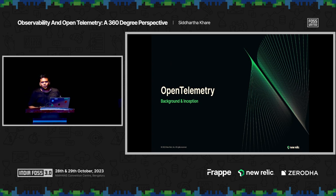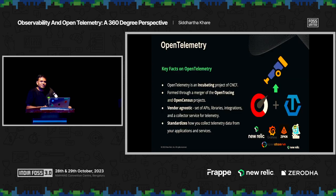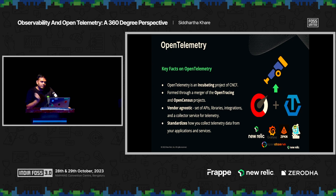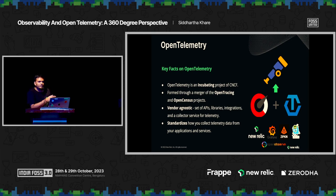Let's talk about OpenTelemetry — what it is and how it works. OpenTelemetry is an incubating project in the CNCF umbrella. It is formed by merging two main projects: OpenTracing and OpenCensus. If you have leveraged Jaeger or Zipkin, you have already experienced the taste of OpenTracing. OpenTelemetry offers a wide variety of APIs and libraries, with which you are not dependent on a specific vendor. OpenTelemetry is also setting up a standardized way of collecting telemetry data from your application.